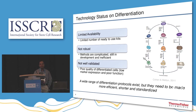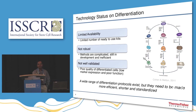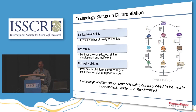For example, iPS cells can be converted into hepatic cells, but their performance compared to fetal hepatocytes is only about 20–30%. A wide range of differentiation protocols are currently available from researchers, but they need to be made more efficient, shorter, and standardized. Some of them take a really long time, and they need to be made easy to use and highly reproducible.